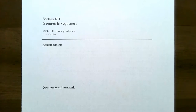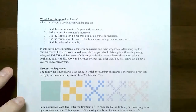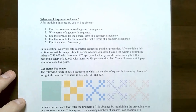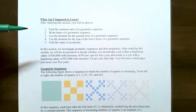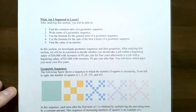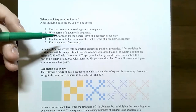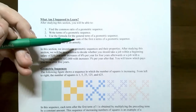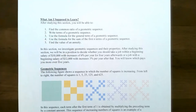Hi everyone, it's Professor Pemberton. In this video we're going to finish up our discussion on geometric sequences. From the previous video, we talked about how to find the common ratio, write terms for a geometric sequence, and the formula for the general term. We haven't talked about the formula for the sum of the first n terms of a geometric sequence, and we're also going to talk about annuities.